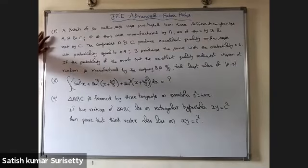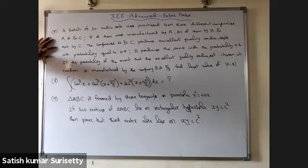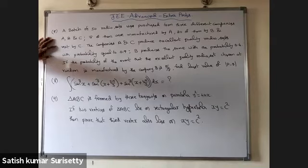Seventh problem: a batch of 50 radio sets was purchased from three companies A, B, and C — 18 from A, 20 from B, and 12 from C. Companies A and C produce excellent quality sets with probability 0.9; B produces them with probability 0.6. If the probability that an excellent quality set chosen at random was manufactured by B is p/q, find the least value of |p − q|.